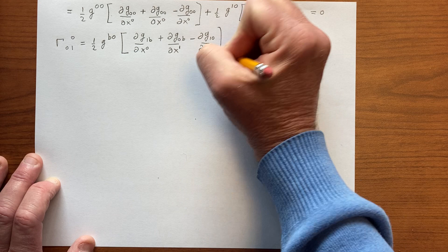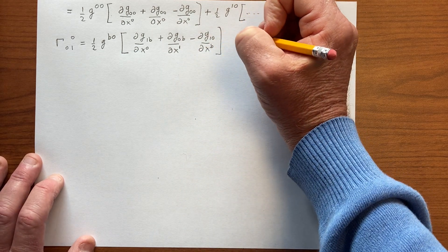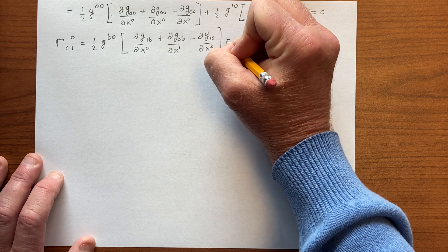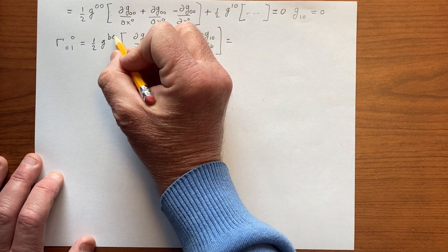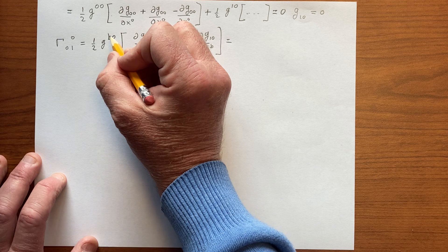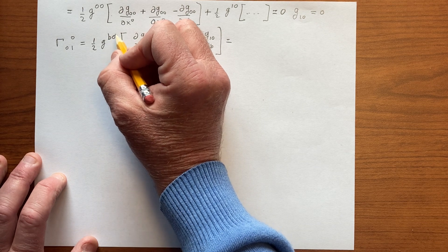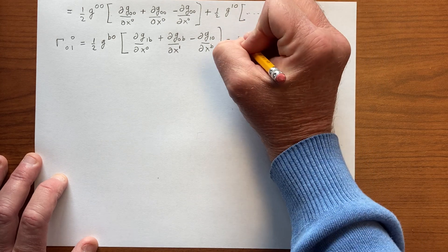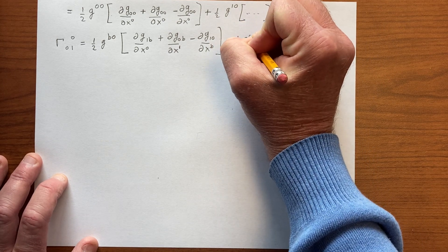Of course, that's just 0. So, again, we don't need to really worry about b being 1 because this will be 0.